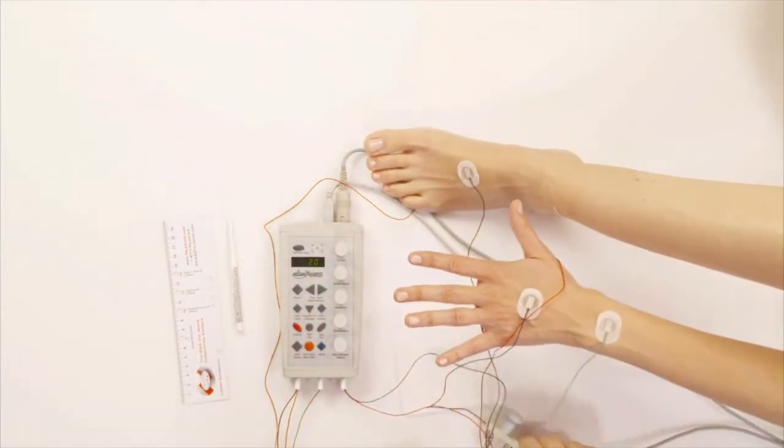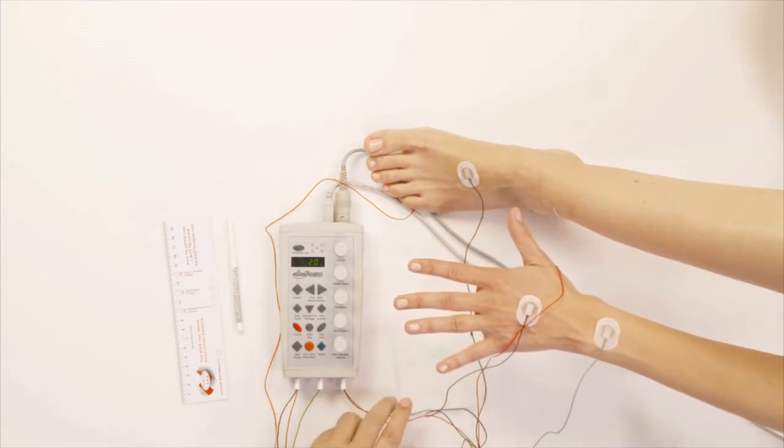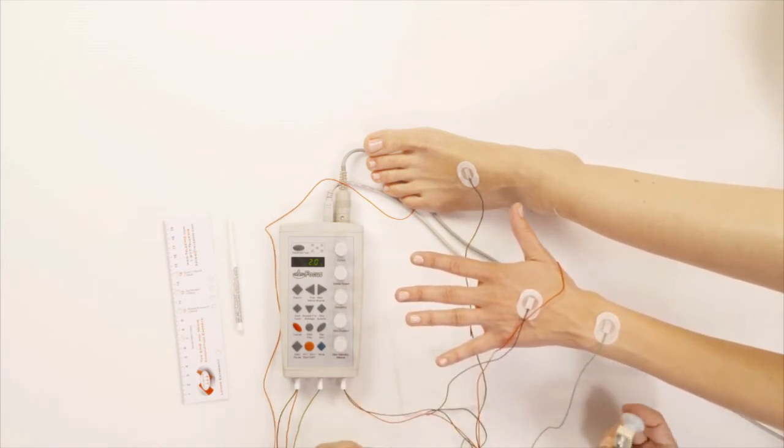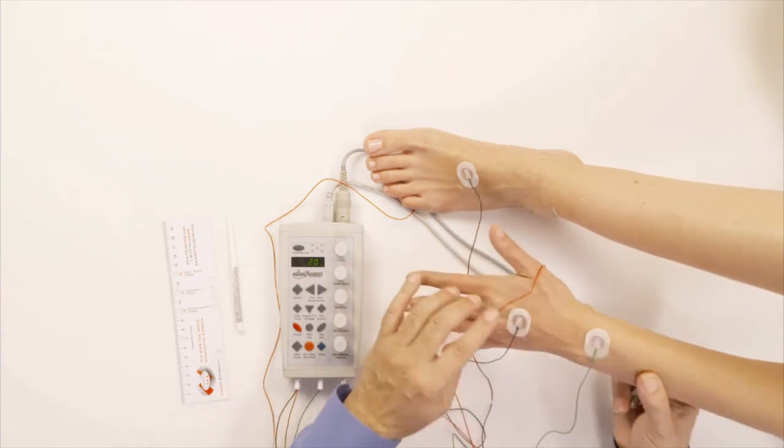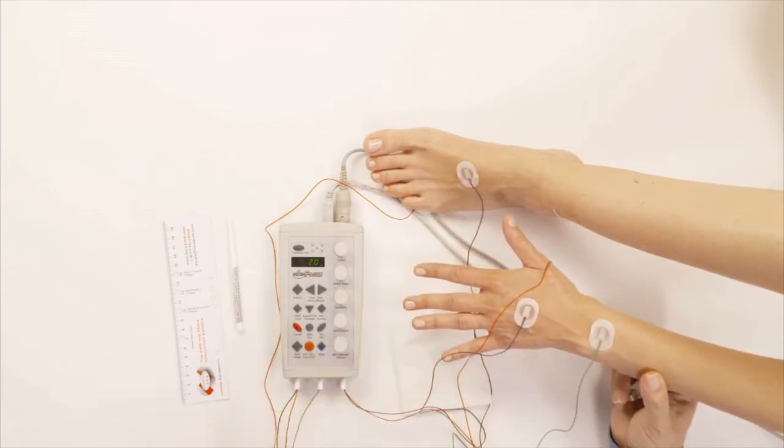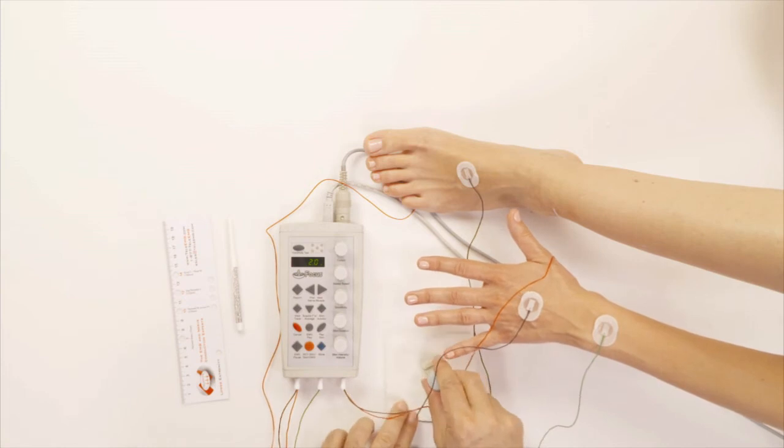So now in order to do the test, all I have to do is stimulate the median nerve. And by stimulating just the median nerve, we're going to get a response both from the hand up here and from the foot. The response is going to be slow because it's going to take some time to go up and come back, but it will appear.